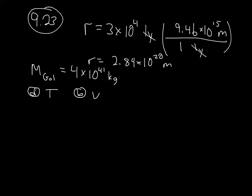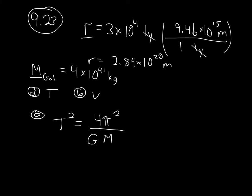We can go to our chapter summary and look at what equations we have. I know a radius and I know the mass of the galaxy. They give us an equation that looks useful for the period — for an object that orbits the sun — which tells us for part A that T squared is equal to 4 times pi squared divided by big G, the universal gravitational constant, times M_s times r cubed.